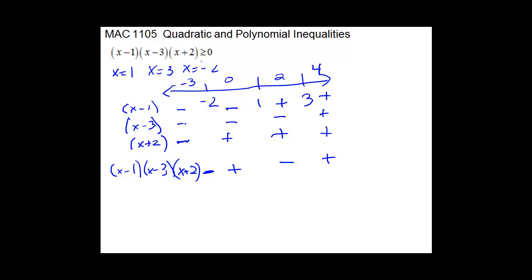Notice back on your original inequality — we want positive, greater than 0. The positive sections are the second and fourth regions. We want those sections, and we include the endpoints because of the equals sign, so we use brackets. Our interval notation is negative 2 to 1, union 3 to infinity.